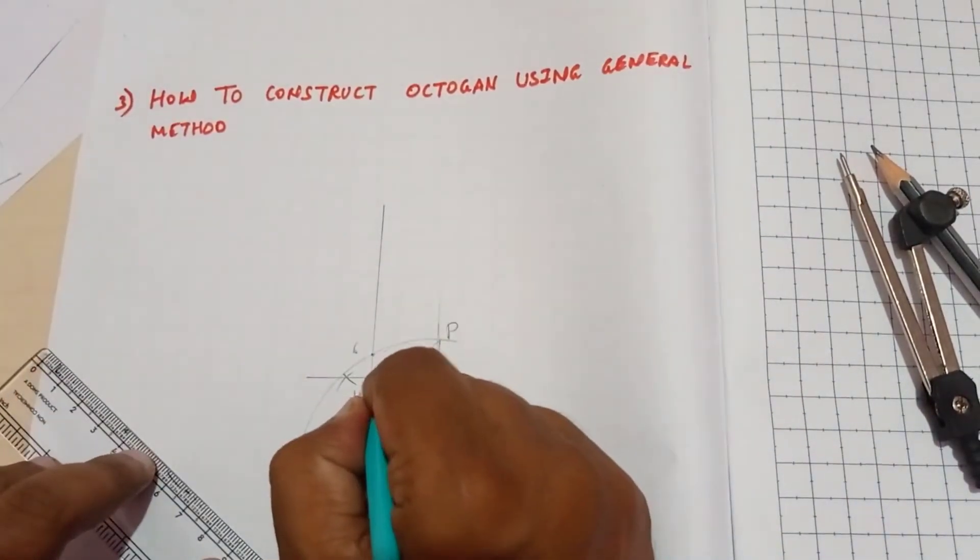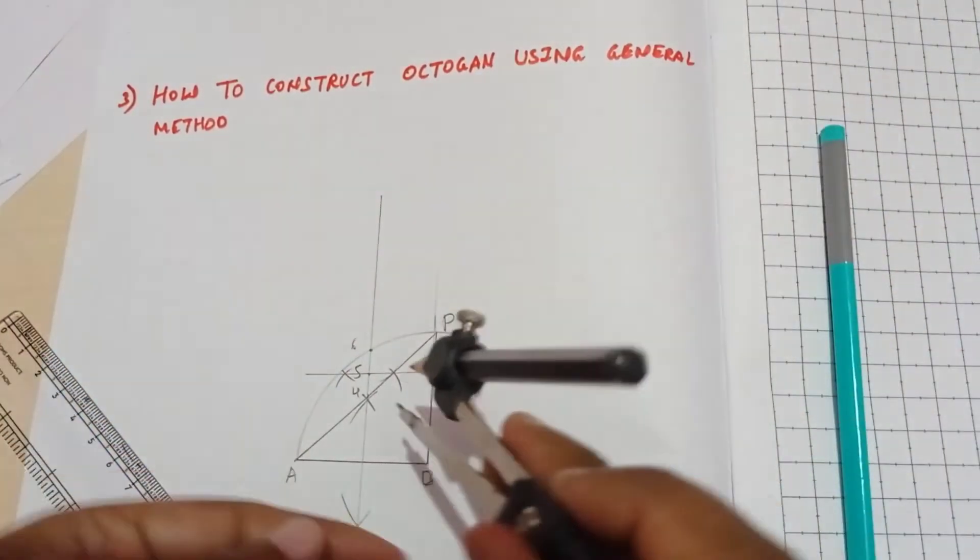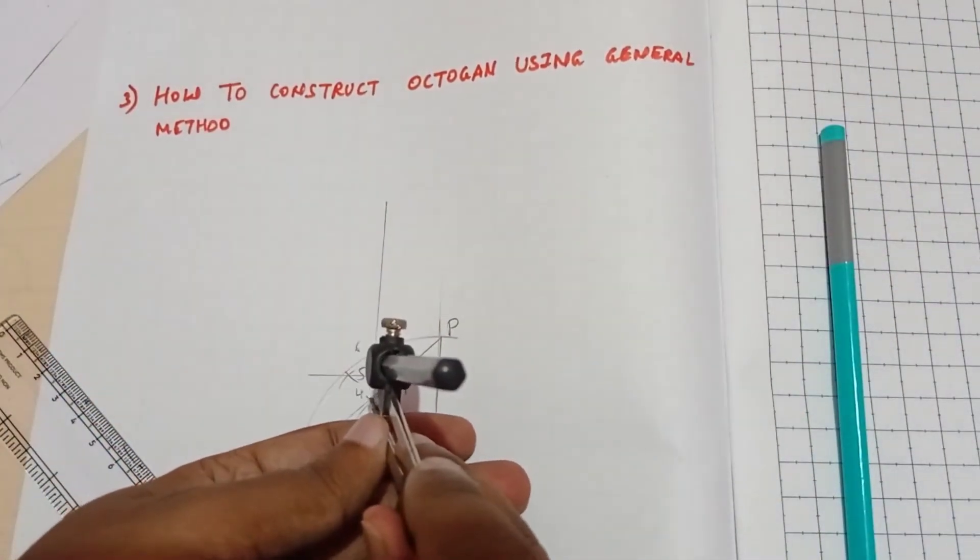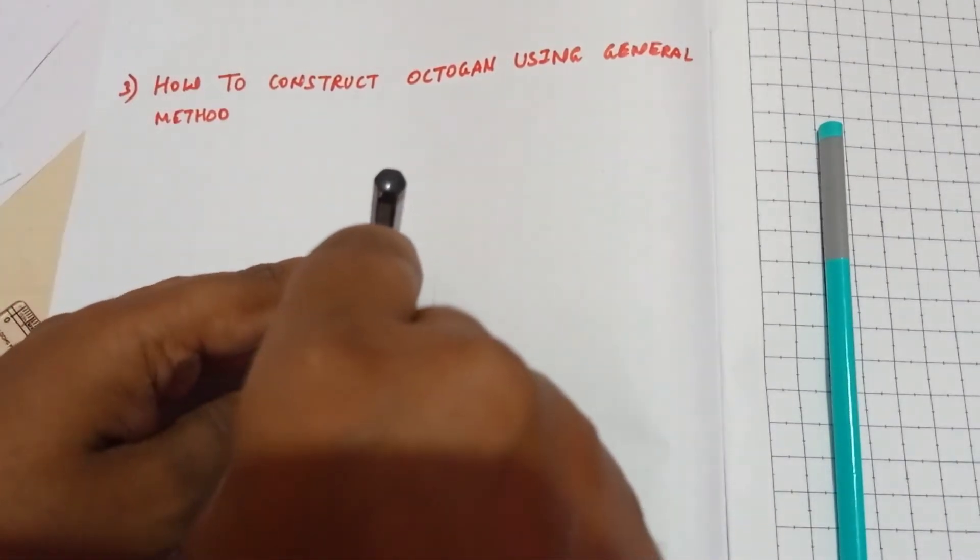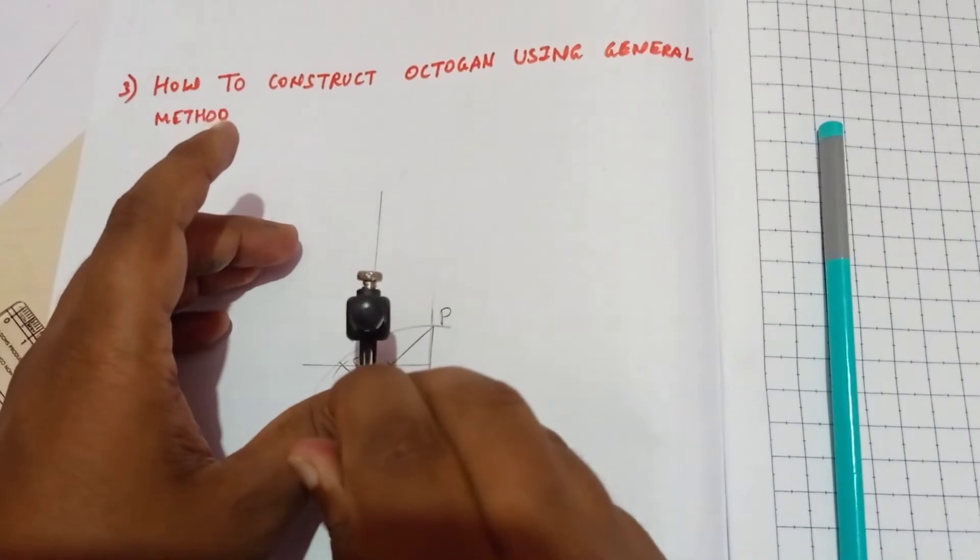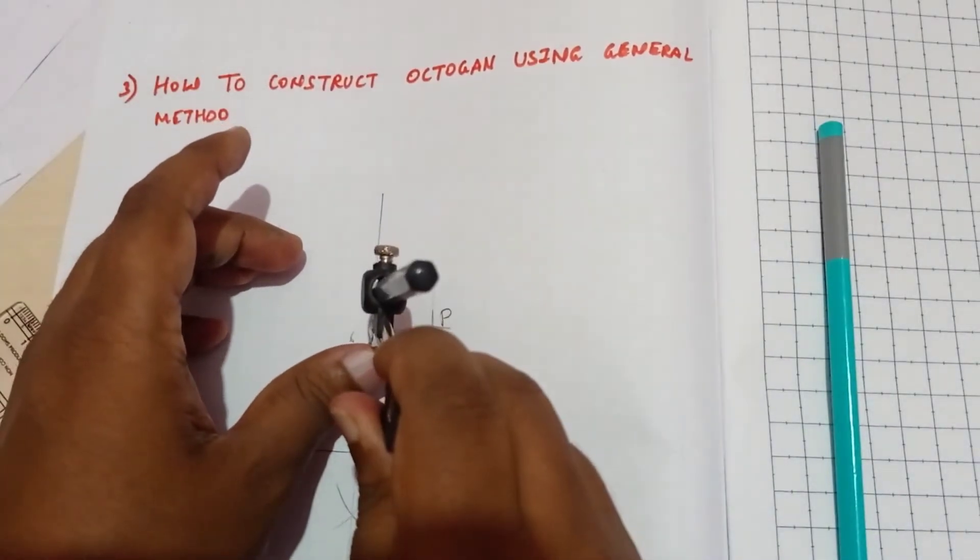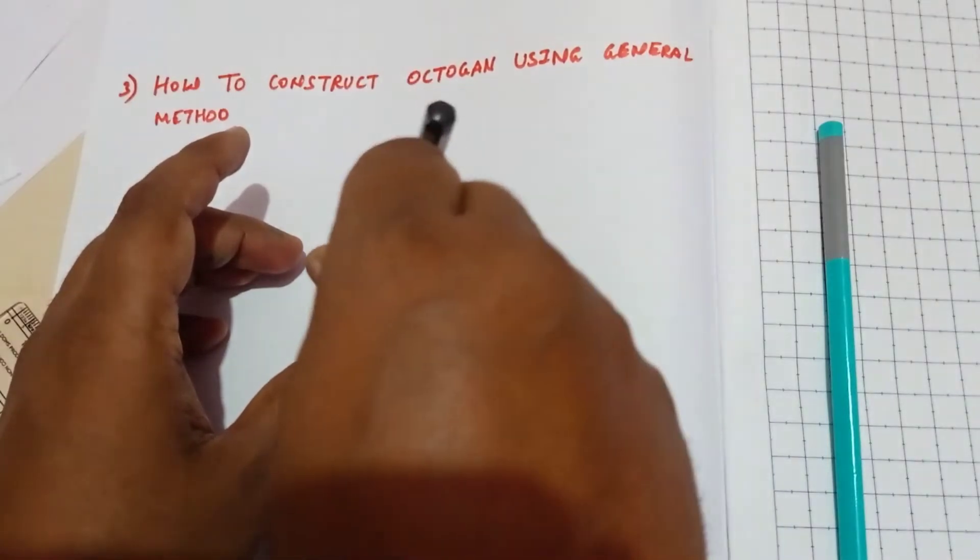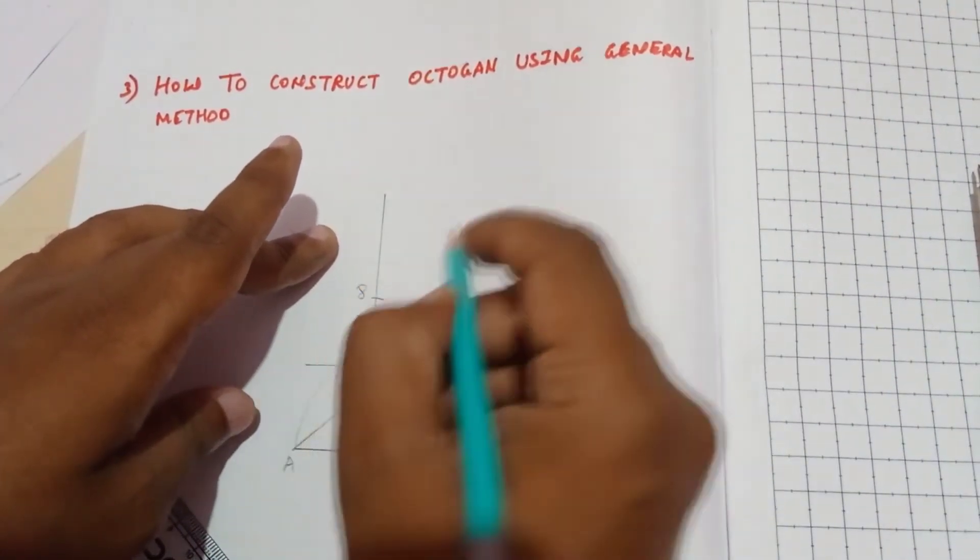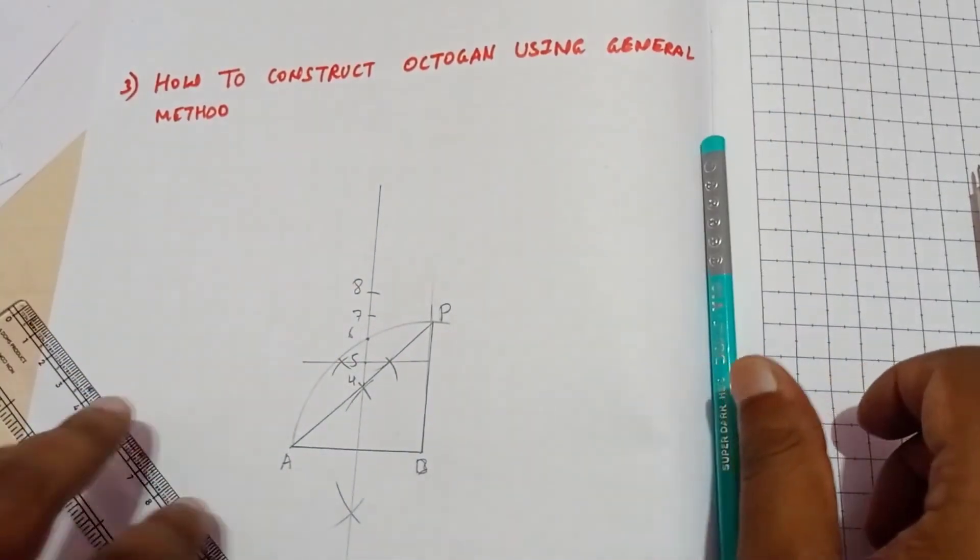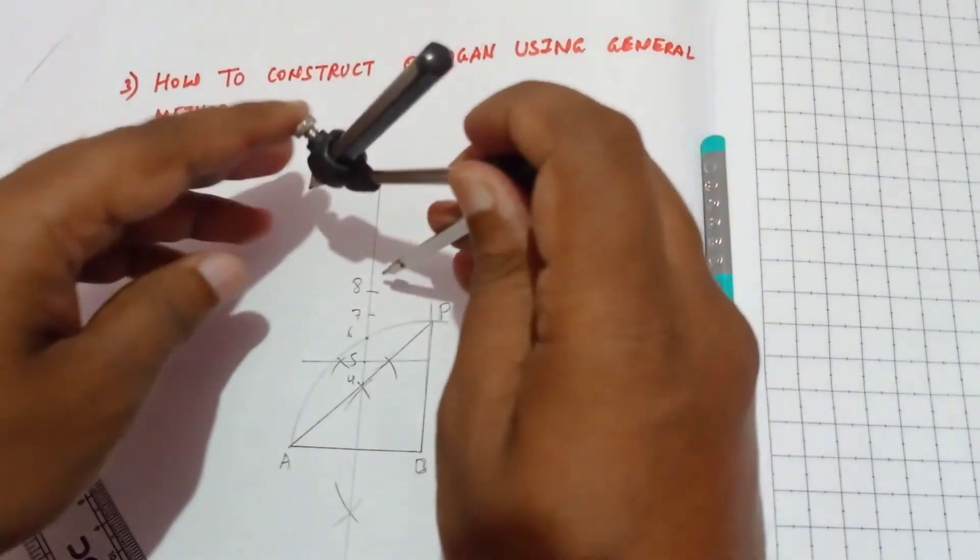This point is point 5. Now what we have to do - you need to measure the length from 4 to 5 using the compass and then cut the length here. So this point is 7, this point is 8. Since we are constructing an octagon, we need to measure the length from 8 to A.